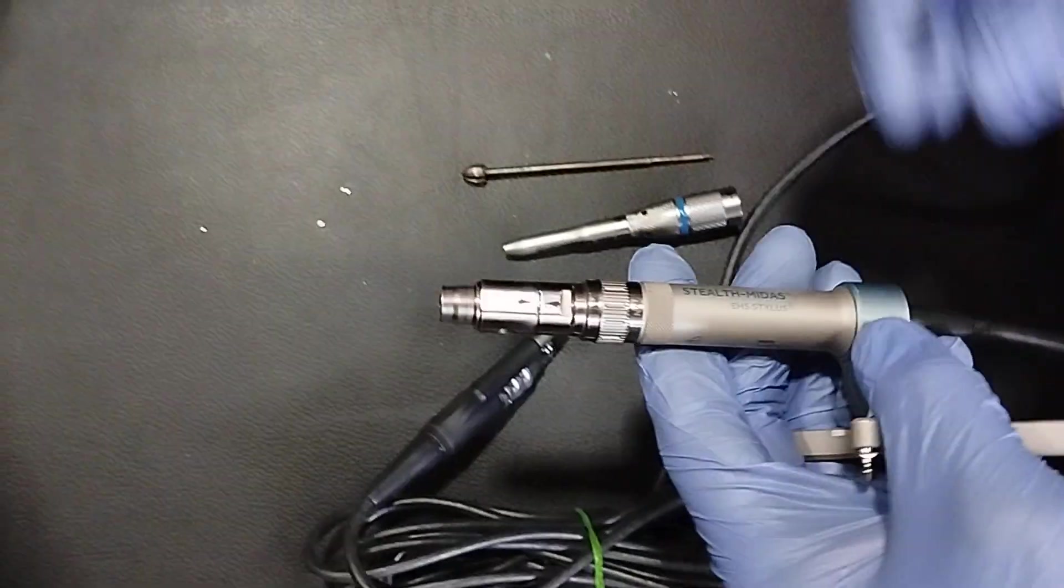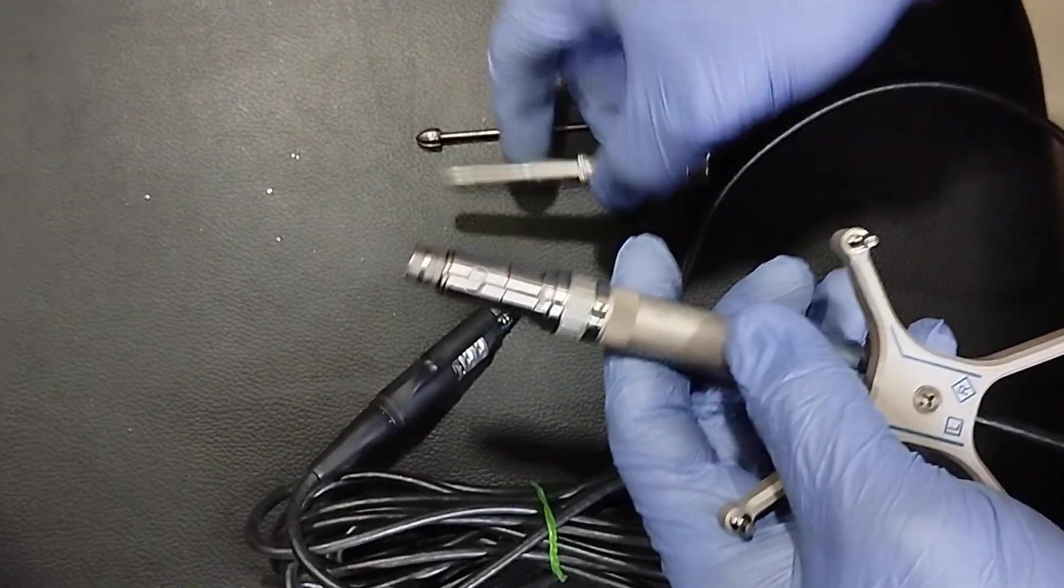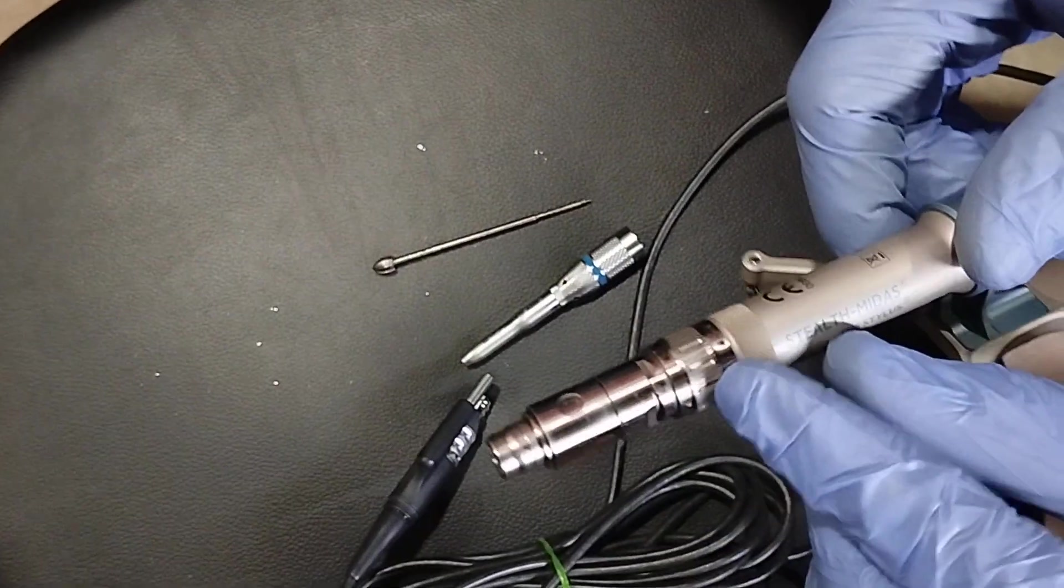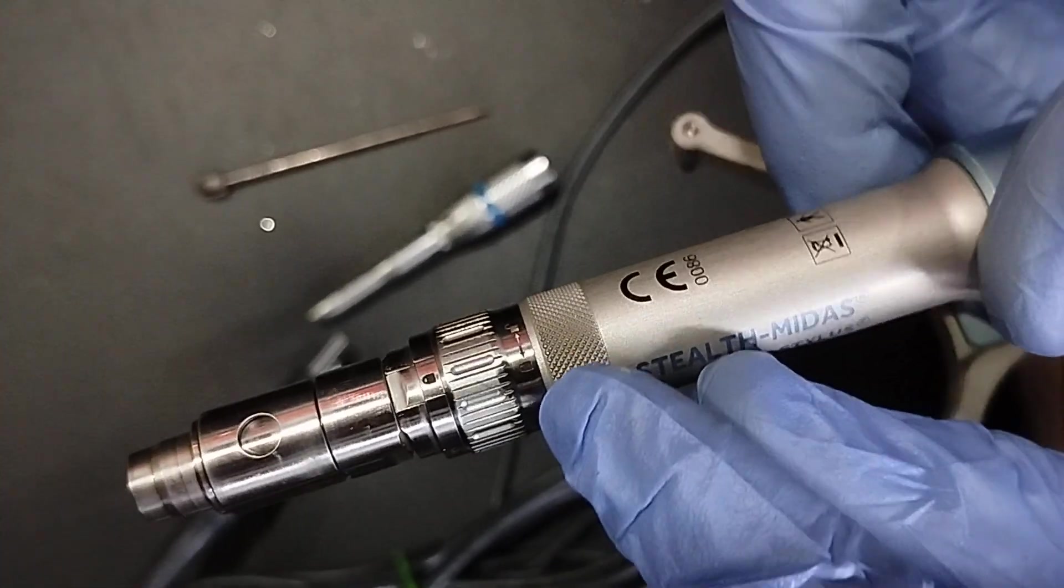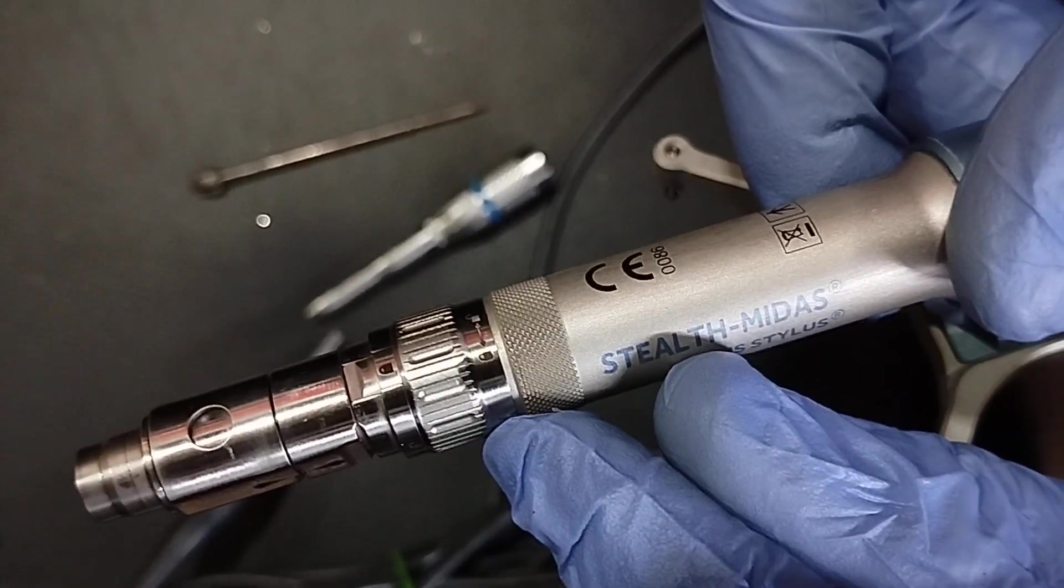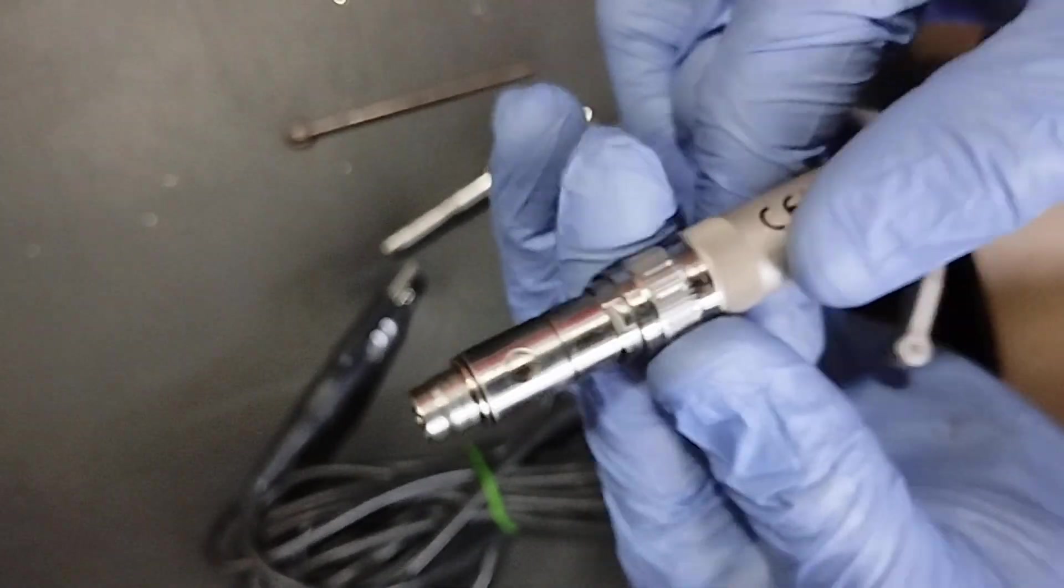So just see that before connecting, what you have to do here - you can see one lock will be there, this grip lock. So what you have to do - this has to be, you can see this, in this side it is locked, in this side it is unlocked.